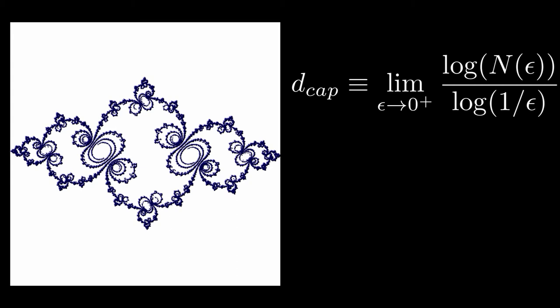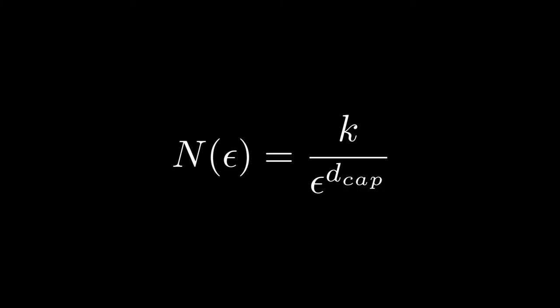To begin, remember from our previous unit, we showed that this relation holds. In particular, we showed that for an object of dimension d_cap, the number of balls of size epsilon needed to cover that object was proportional to 1 over epsilon to the capacity dimension.